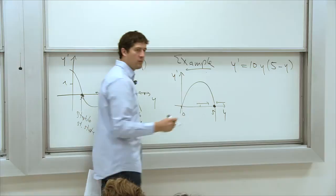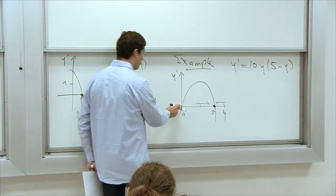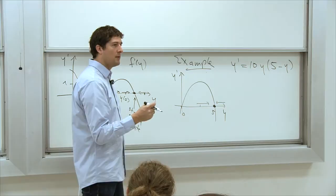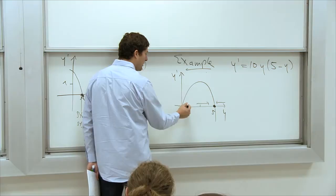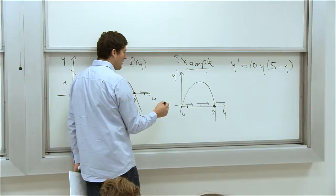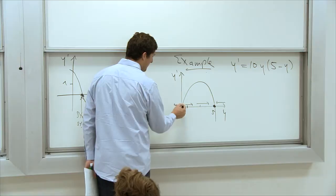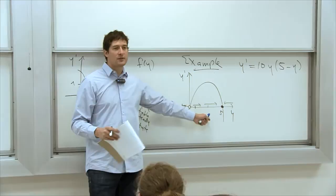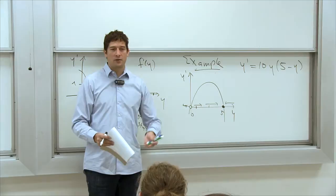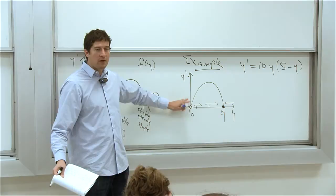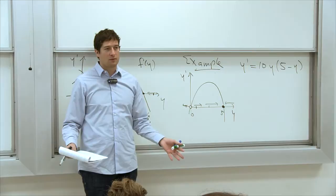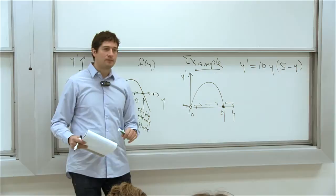What about y equals 0? If you start just above zero, f is positive so the solution grows away. If you start just below zero, f is negative — it decreases away. So y equals 0 is unstable. Since we're thinking about populations and concentrations, negative y is not biologically realistic, so we often ignore that region. This system has two steady states: one stable at y equals 5, and one unstable at y equals 0.